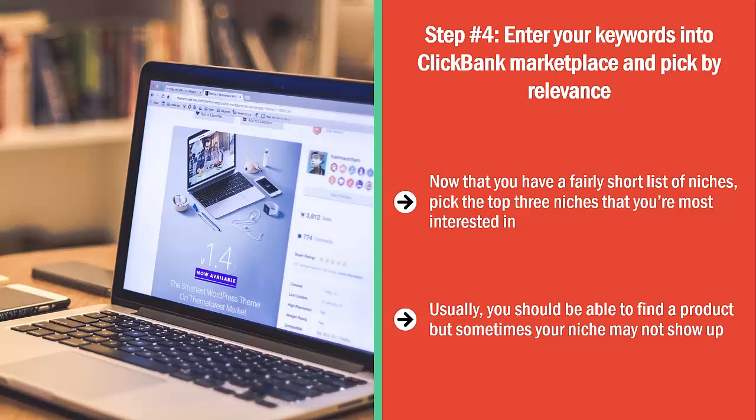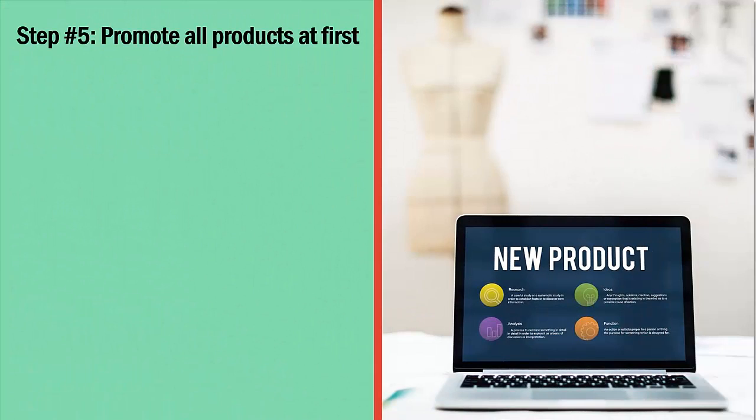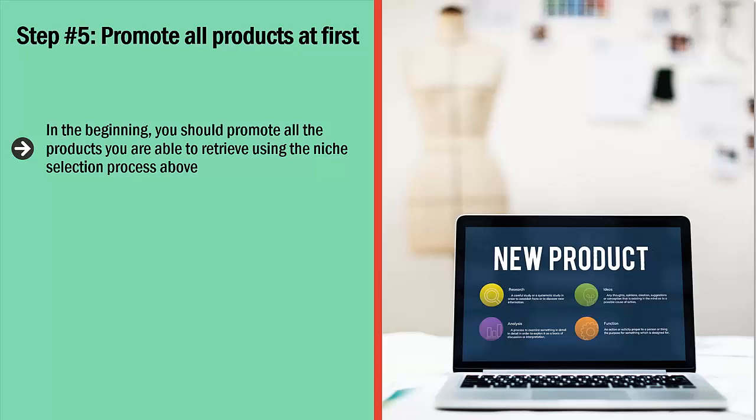Step 5: Promote all products at first. In the beginning, you should promote all the products you are able to retrieve using the niche selection process above. Your strategy is pretty straightforward: promote all the products at your site first and pick the top three winners — the products that convert the most. Don't focus on how much traffic they get; traffic is worthless unless it converts. Always remember that. Pick the top three winners in terms of conversions and stick to those.